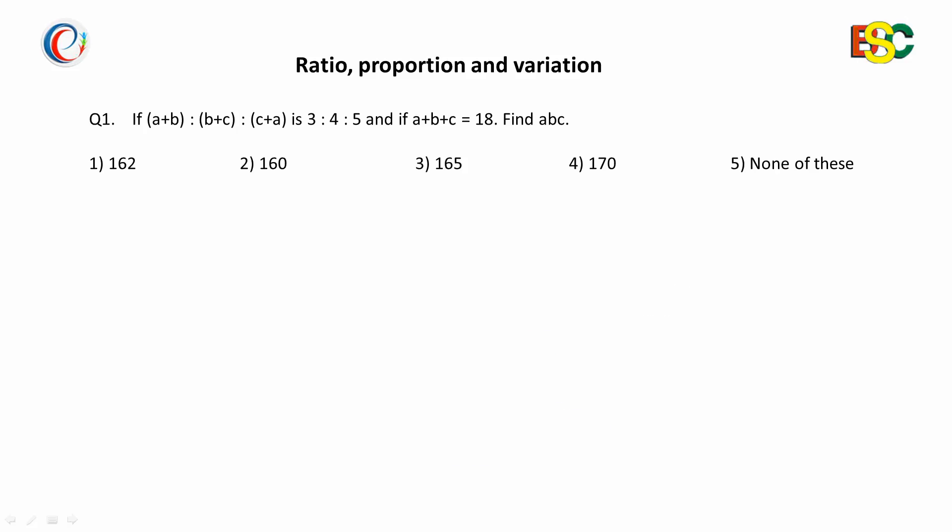First of all, you will add all these three terms. On adding, you will get 2(a+b+c) equals 3+4+5 equals 12, or a+b+c equals 6. But in the question, a+b+c is given as 18, so we can say 6 is equivalent to 18, or 1 is equivalent to 3.